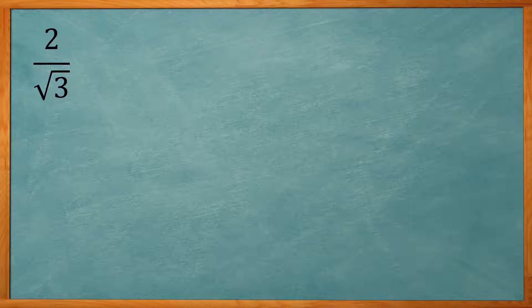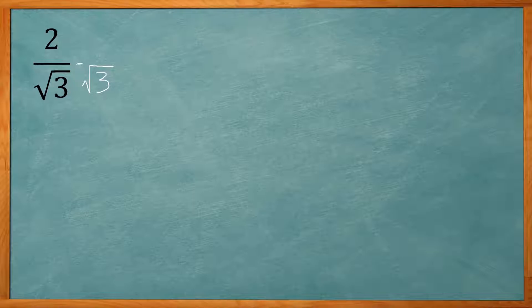So here we have 2 over the square root of 3. How do I get rid of that square root? What we usually do is just multiply it by itself. So we multiply top and bottom by square root of 3. We can do that because square root of 3 over square root of 3 is just equal to 1, so we're really just multiplying by 1.